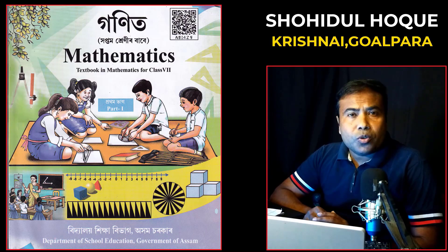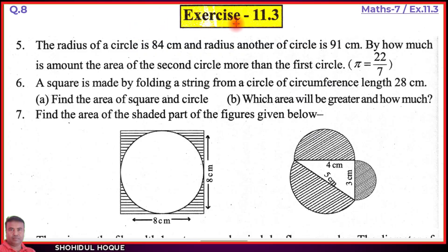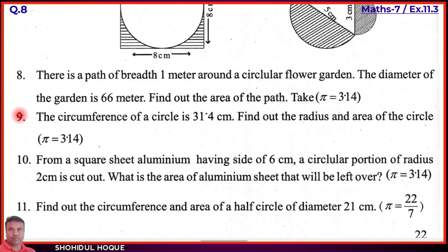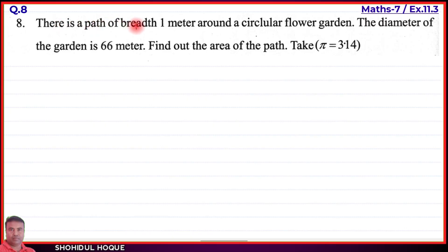Mathematics class 7, new book part 2, exercise 11.3, English medium, question number 8 and 9. Question number 8: there is a path of width 1 meter around a circular flower garden. The diameter of the garden is 66 meters. Find the area of the path. Take π equal to 3.14.